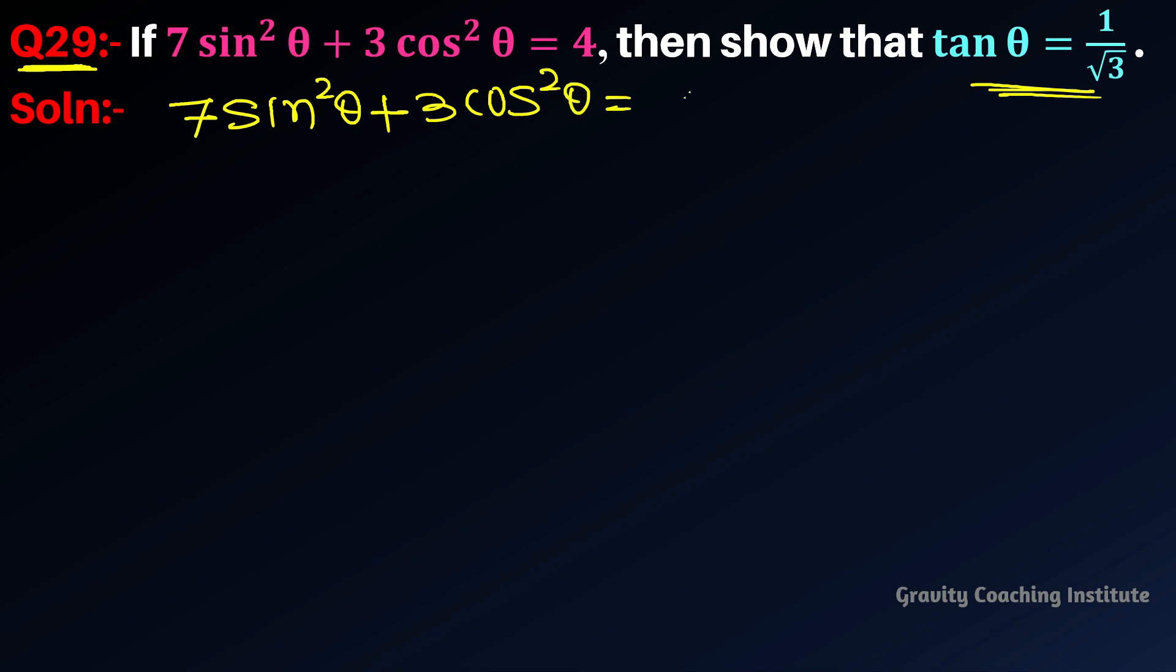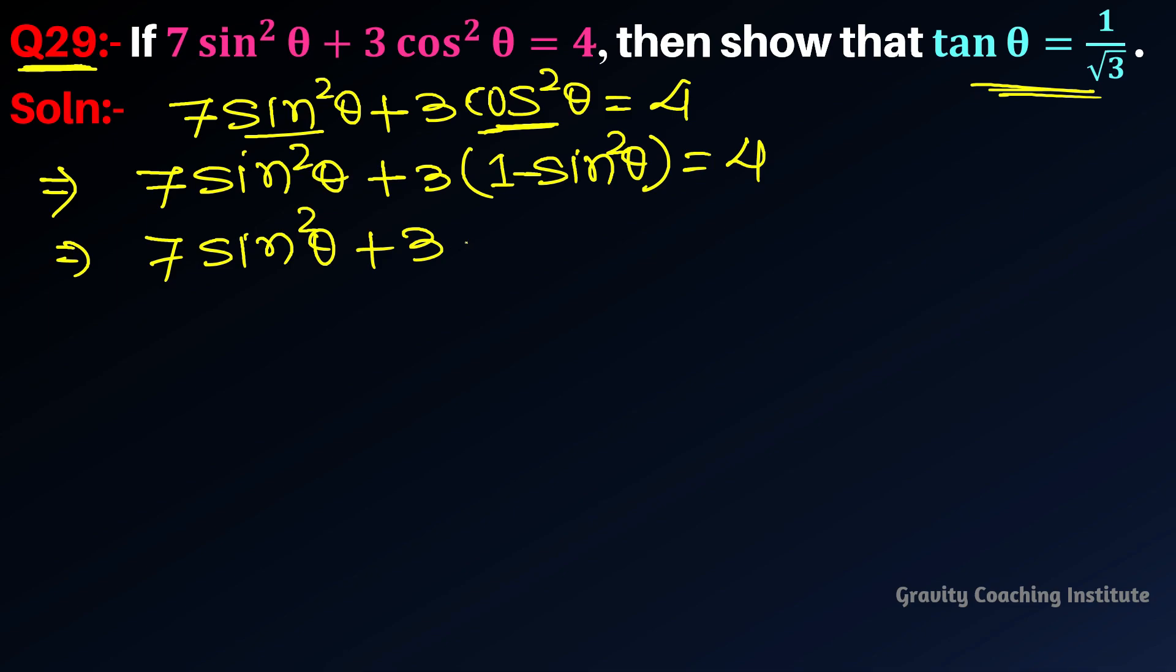We will change cos²θ to sin terms. We will change cos²θ to (1 - sin²θ). So 7sin²θ + 3(1 - sin²θ) = 4, which becomes 7sin²θ + 3 - 3sin²θ = 4.